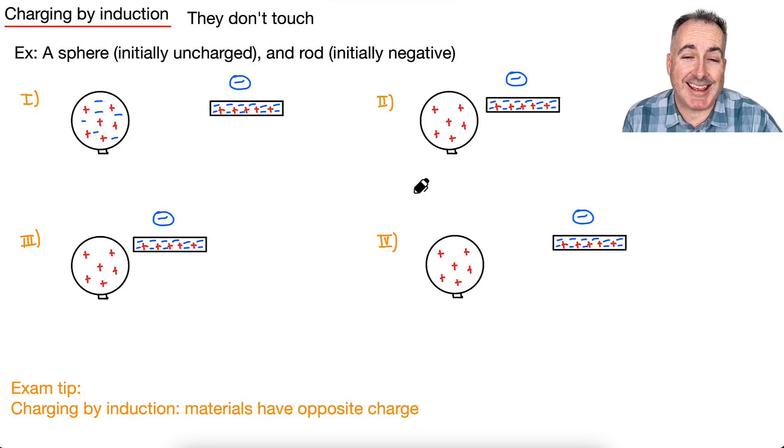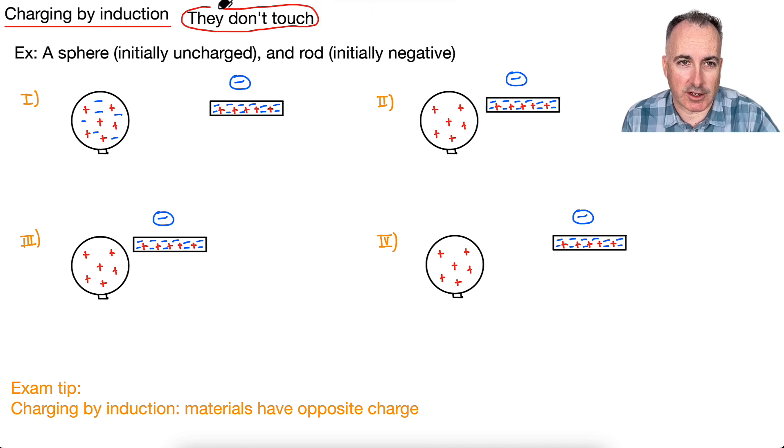Okay, last but not least, it's going to be charging by induction. Induction is where, crucially here, they don't actually touch. Okay, they're not actually going to touch these two objects here. So we've got, let's say, a sphere that's initially uncharged. So in other words, it's just neutral. And then we've got a rod that's negatively charged. So this is the initial situation. And let's count the electrons. We've got six electrons here. Now, they're not actually going to touch. But what we're going to do is we're going to bring them close. So when this rod gets close without actually touching, what do you think is going to happen to those electrons that can move around? Well, they're going to be repelled by these lots of electrons. So a lot of them are going to want to move away. I'm going to have all the electrons sort of move over to this end.